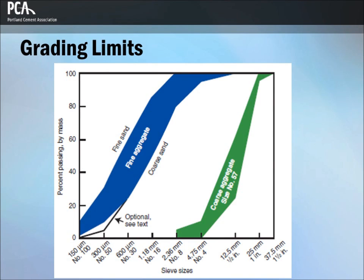The grading and grading limits are usually expressed as the percentage of material passing each sieve. This graph shows these limits for fine aggregate and for one specific size of coarse aggregate. Grading affects relative aggregate proportions as well as cement and water requirements, workability, pumpability, economy, porosity, shrinkage, and durability of concrete. Variations in grading can seriously affect the uniformity of concrete from batch to batch. In general, aggregates that do not have a large deficiency or excess of any size and give a smooth grading curve will produce the most satisfactory results.